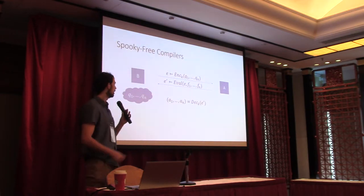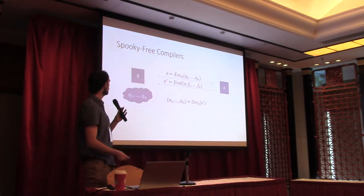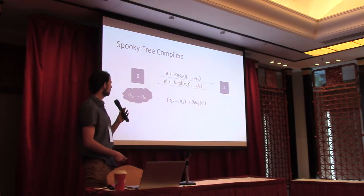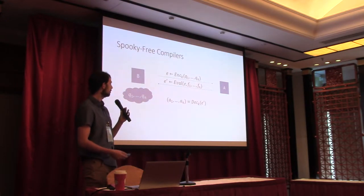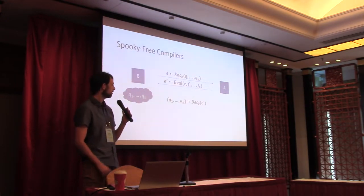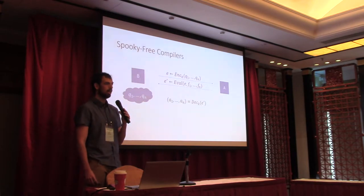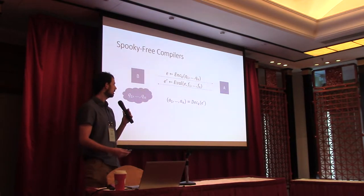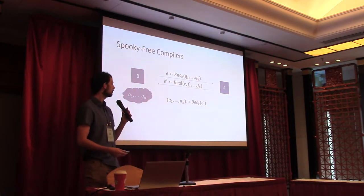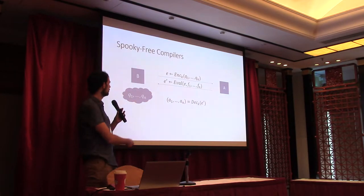This procedure we call a scrutiny compiler, which has an encoding algorithm, an evaluation algorithm, and a decoding algorithm. We want, on one hand, flexibility enough to allow Alice to evaluate these functions.